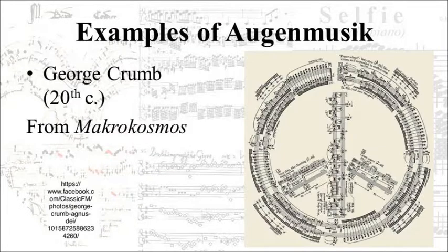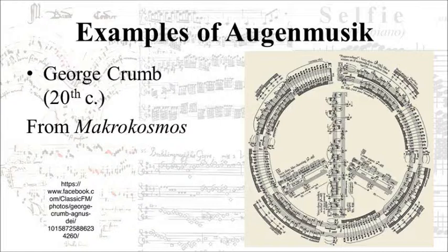Now we have an example from the 20th century — this is from the Macrocosmos by the recently deceased George Crumb, a setting of the Agnus Dei for solo voice and piano, clearly in the shape of a peace sign. This I would consider decorative Augenmusik for reasons similar to the Baud-Cordier example, since the peace sign is made from shaping the musical staves themselves, not the audible music actually notated on those staves.